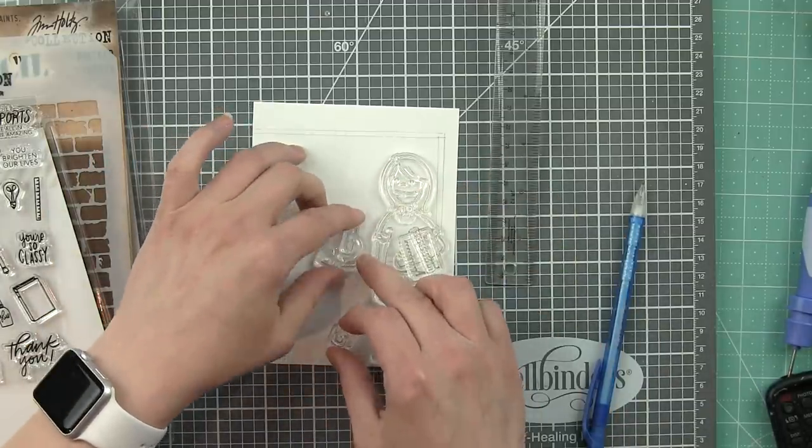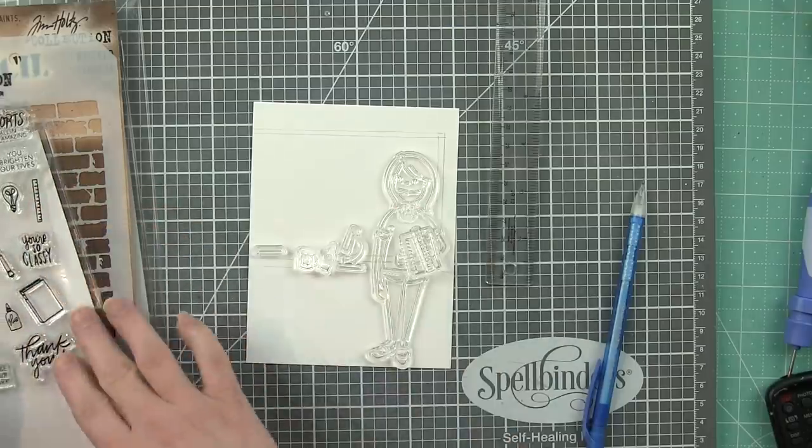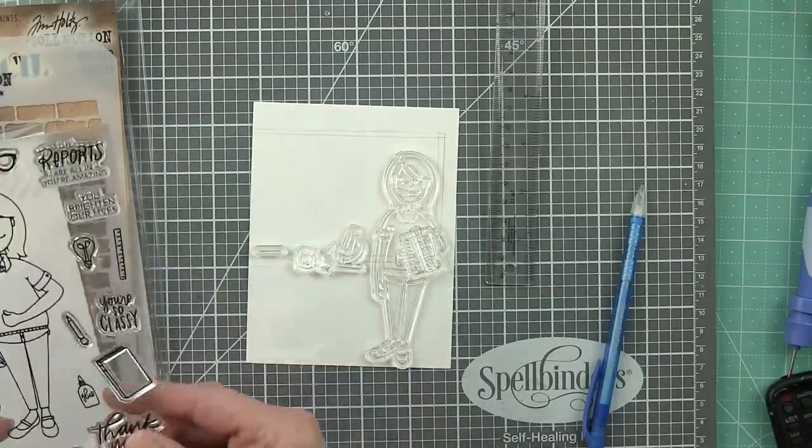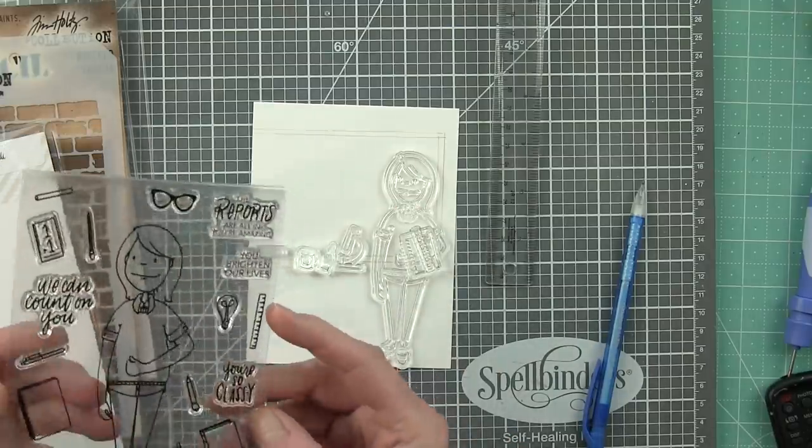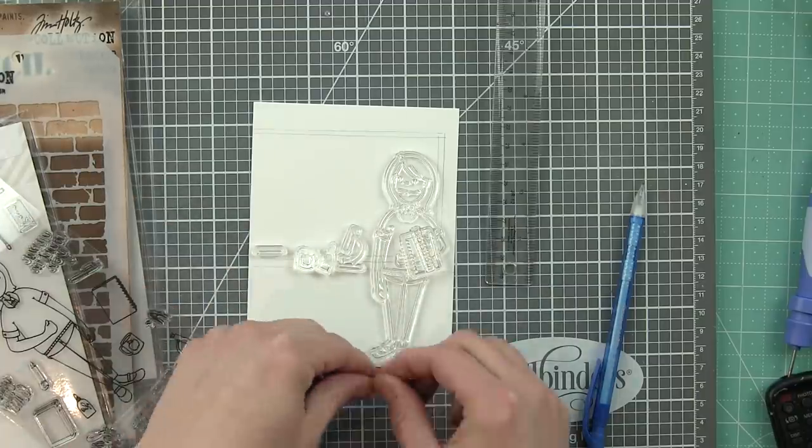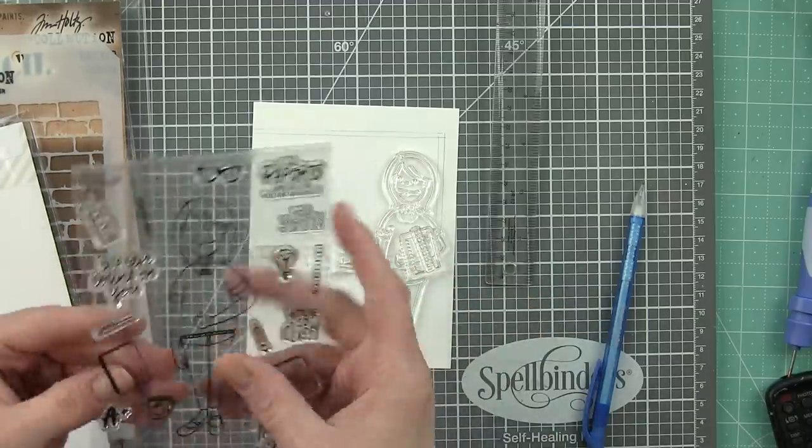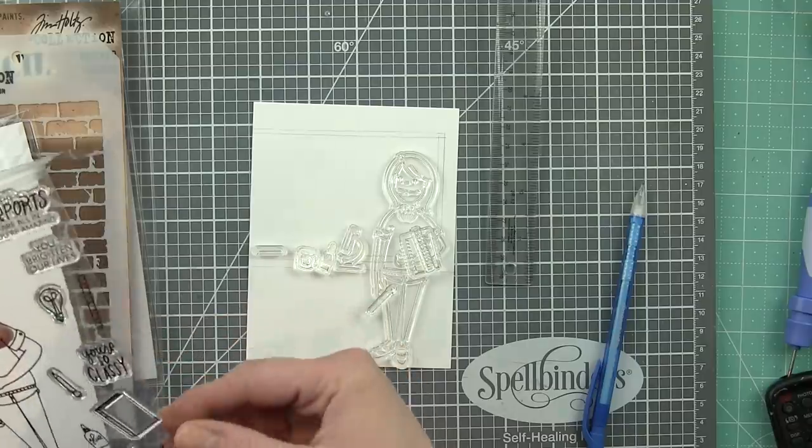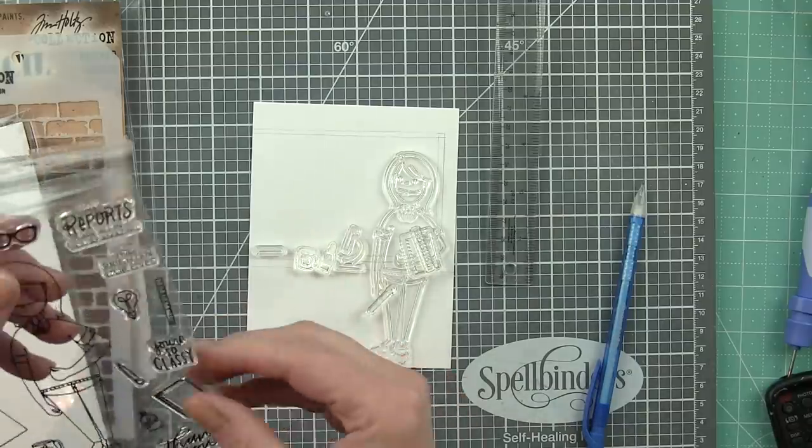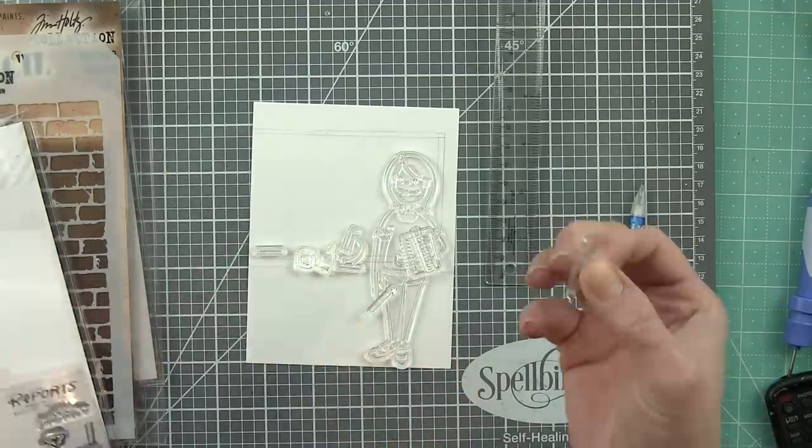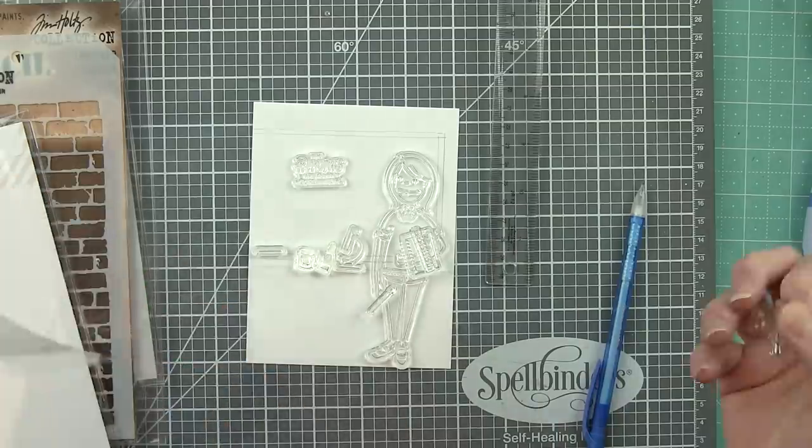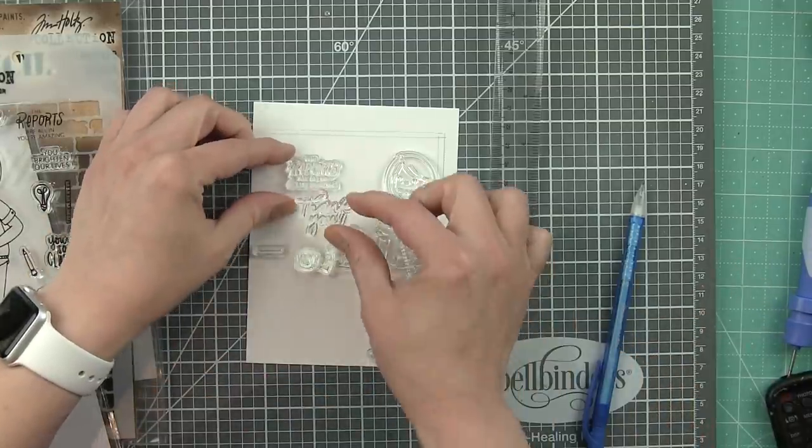So I really need to use my Leading Lady stamp to gauge and guide me for where I want that to go. So probably about, I would say, a half inch up from the bottom of the card maybe, maybe a little bit more. I don't think I really measured it all that much, but we're going to draw that in as well.